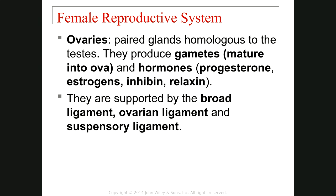The first structure I want to talk about is the ovaries. The ovaries are paired glands, very similar in function to the testis. They can produce gametes — the mature form of the oocyte — and they can make different hormones: progesterone, estrogen, inhibin, and relaxin. They are supported by the broad ligament, ovarian ligament, and suspensory ligament.